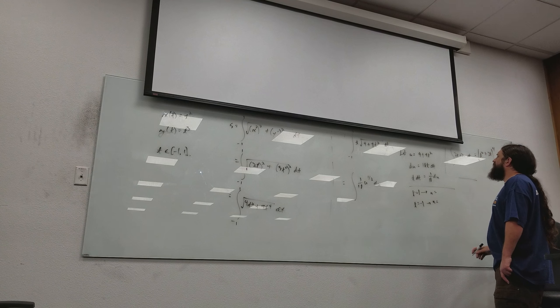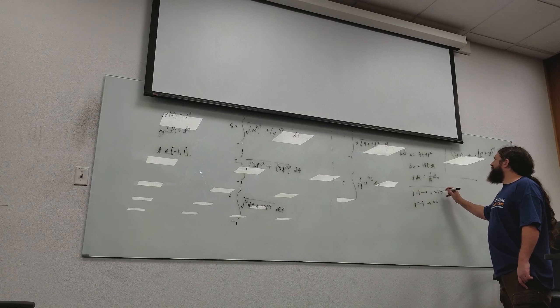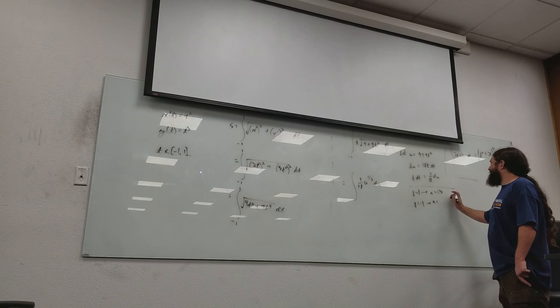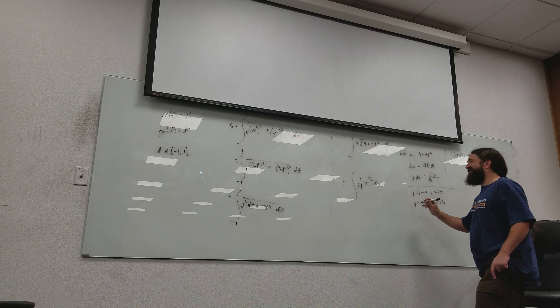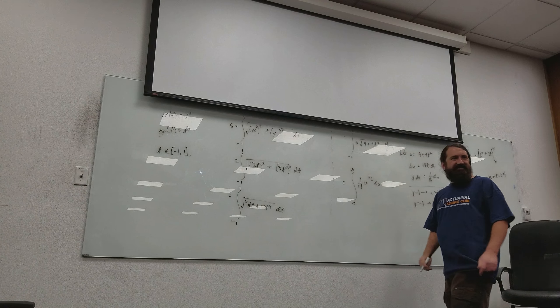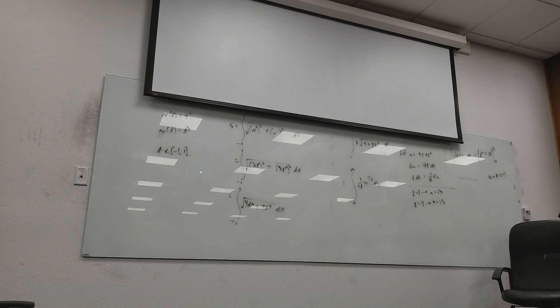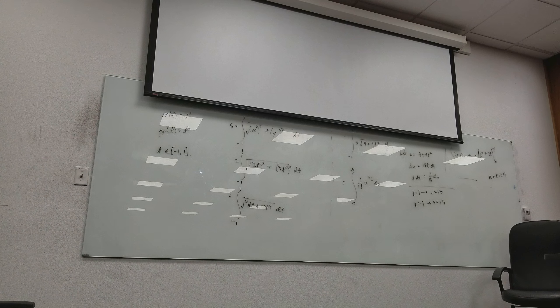So when t is equal to 1, u is 13. When t is equal to negative 1, u is 13. What the heck does this mean? That doesn't seem good. I'm sure the arc length of that curve is not 0. What do you think is happening here? Take a look at the structure of the curve.